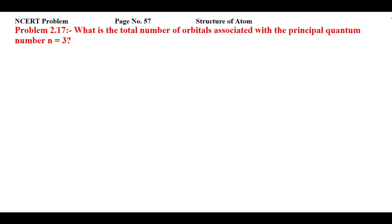Students, this is NCERT problem 2.17 from page number 57 of Structure of Atom. Let's read the statement: what is the total number of orbitals associated with principal quantum number n equal to 3? So you are given the value of the principal quantum number and you have to find the number of orbitals associated with this orbit.